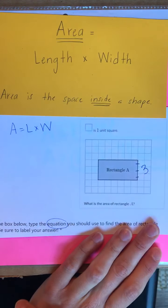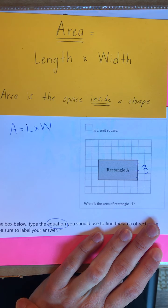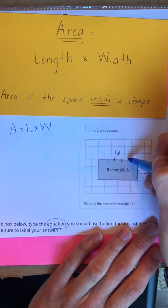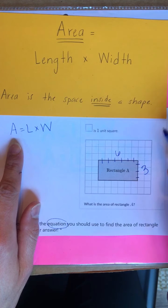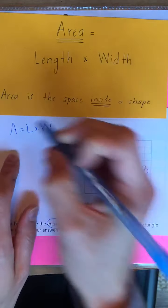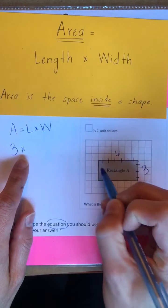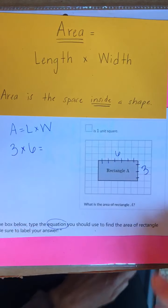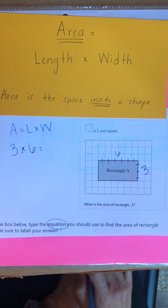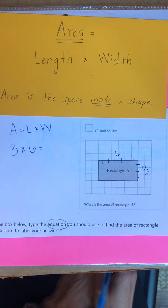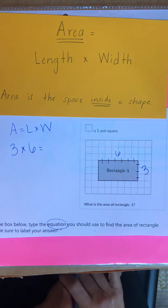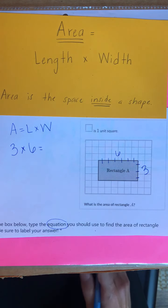And the width — can you go ahead and find the width for me? Very good. The width is 6 units, right? 1, 2, 3, 4, 5, 6 units. So our equation would look like this: our length, 3 units, times our width, 6 units, equals. If you're not sure what 3 times 6 is, remember you can skip count by 3s or 6s, draw a picture, or use a hundreds chart — any strategy that works for you.